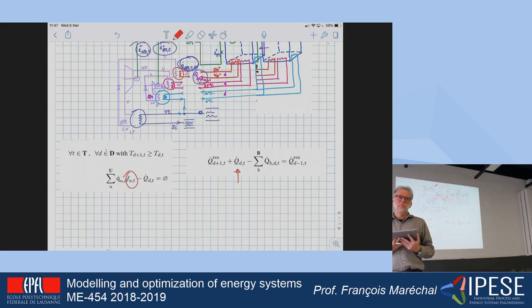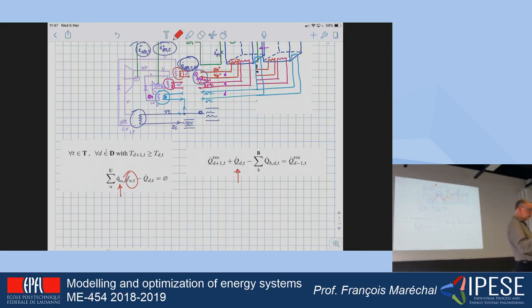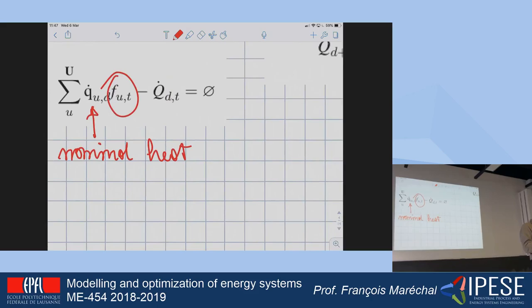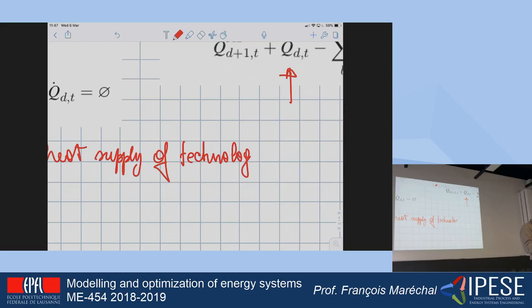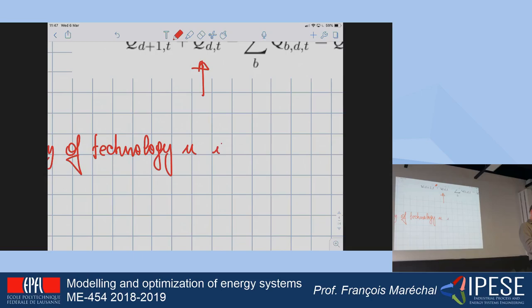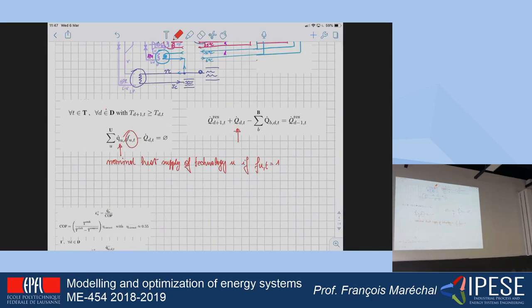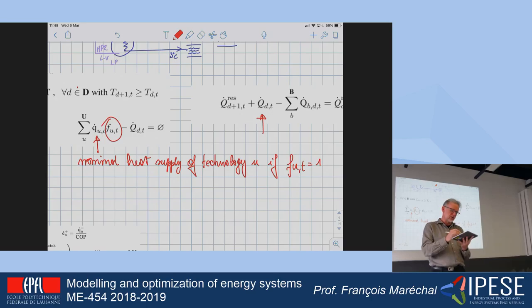I'm assuming nominal conditions, so when the level of use fu is equal to one, it has nominal production — that is the nominal heat supply of technology u. I'm going to use this technology at a given level, and I have to add the nominal heat supply of technology u in distribution system d.